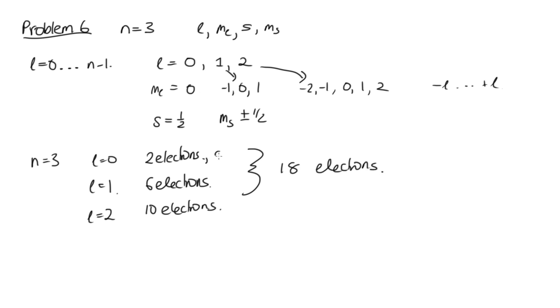In terms of chemistry: the 2 electrons are the 3s electrons, the 6 are the 3p electrons, and the 10 are the 3d electrons on our periodic table.